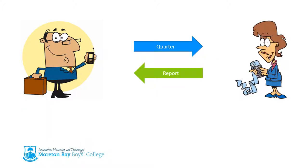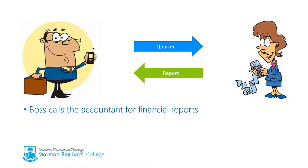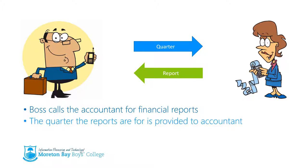The final example is the accountant, where the boss rings up the accountant and says, can I have the report for the first quarter please? The accountant provides the information and sends the report back to the boss. The boss provides information to the accountant specifying which quarter the report is for, and then the financial report is returned. So in this case, the main program passes information to the module and the module returns information back to the main program.